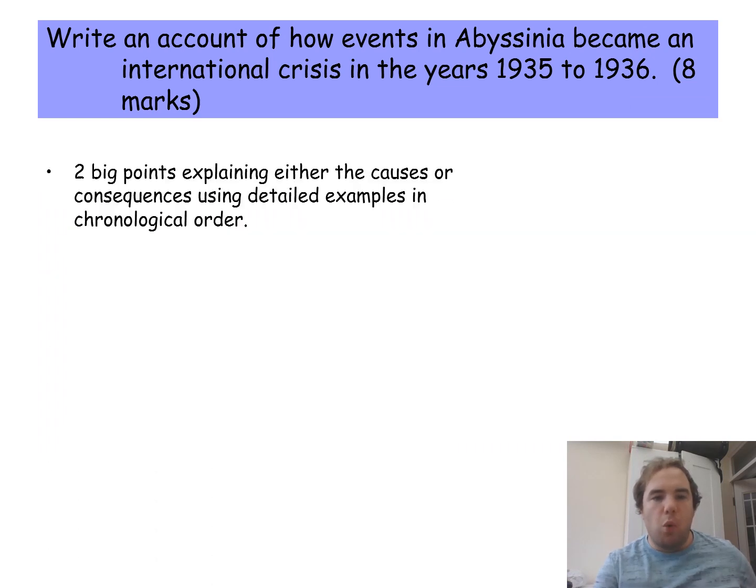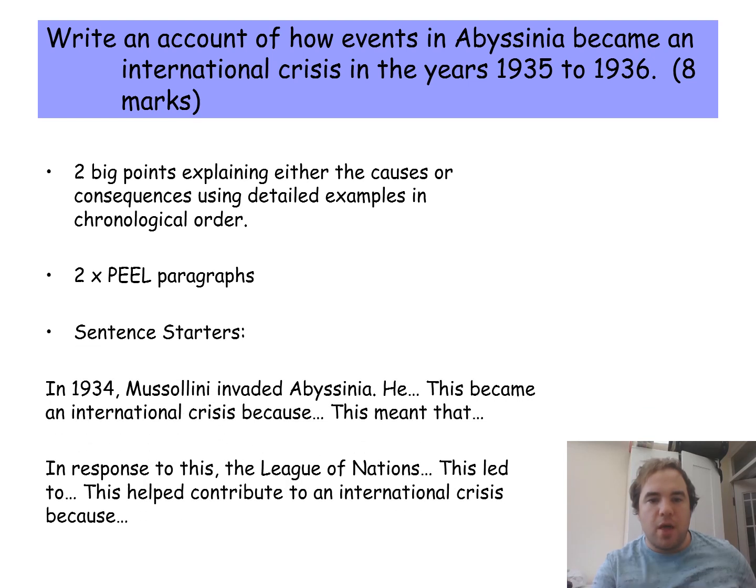So what you want, just to go back over it, is two big points explaining either the causes or consequences using detailed examples in chronological order, and that needs to be in a format of two PEEL paragraphs. There are some sentence starters there to help you with a couple of good starting points to work from.